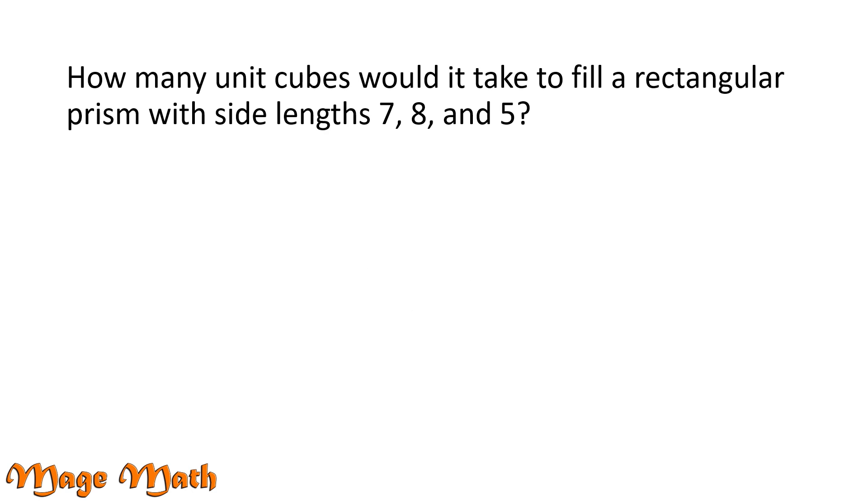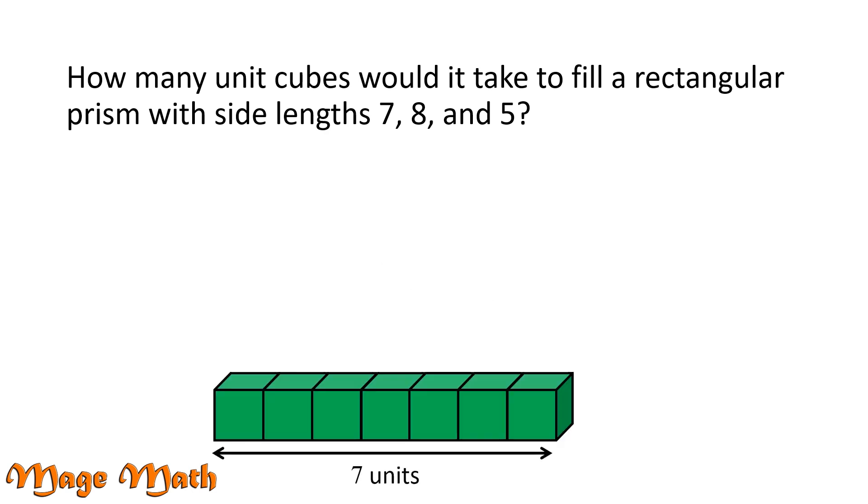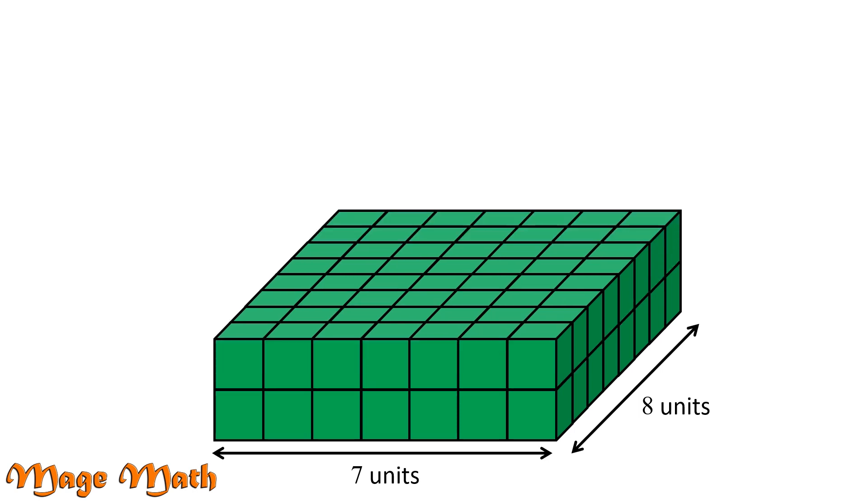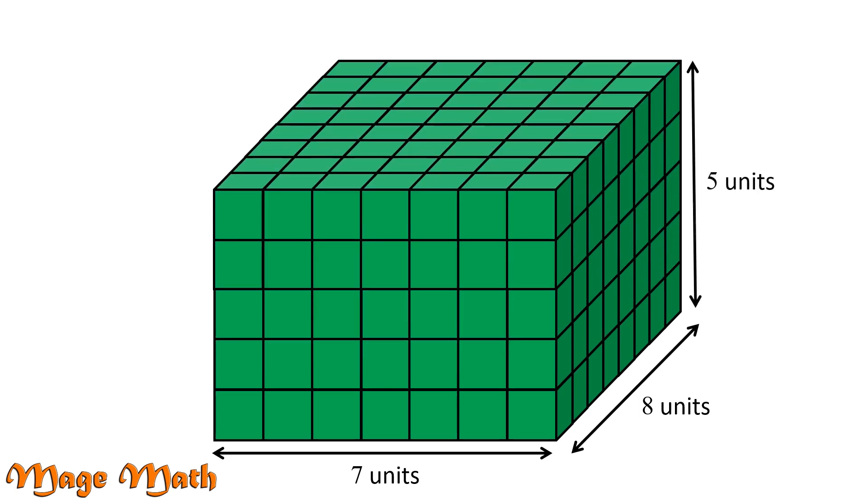so our rectangular prism will have 7 unit cubes for the length, 8 unit cubes for the width, and 5 unit cubes for the height. We want to find out how many unit cubes are needed to fill our prism as a whole.